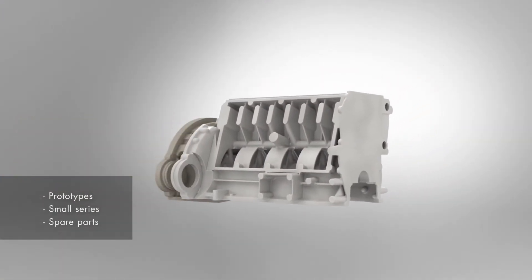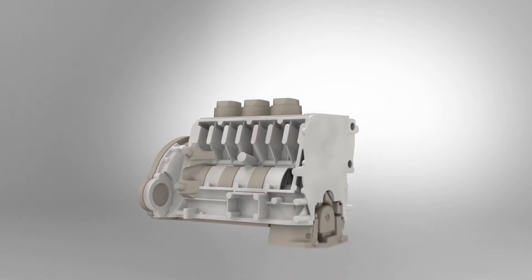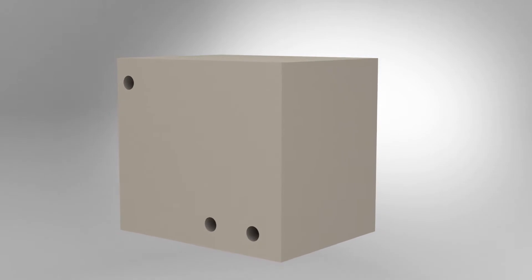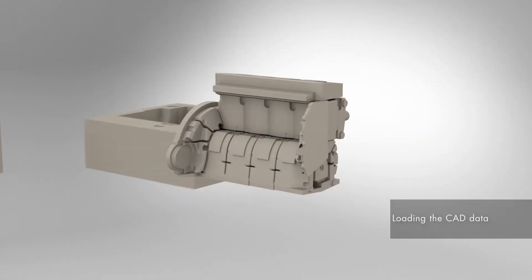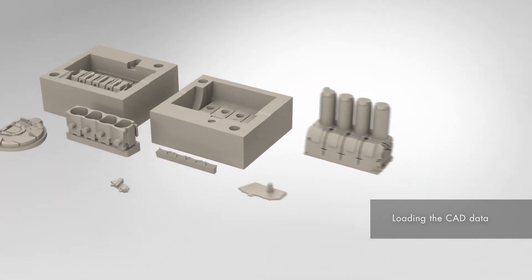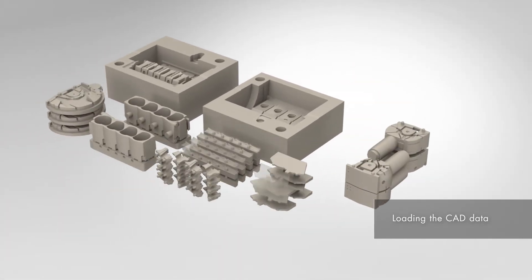The layered building process is shown using an example of a motor block. The CAD data of the molds is arranged virtually in the building space. This build space corresponds to the job box of the VX2000.